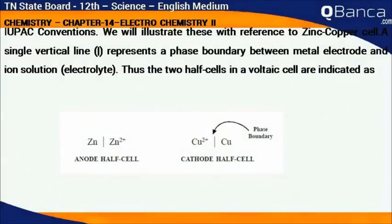IUPAC conventions — we will illustrate this with reference to the zinc-copper cell. A single vertical line represents a phase boundary between the metal electrode and the ion solution (electrolyte). Thus, the two half cells in a voltaic cell are indicated as Zn | Zn²⁺ for the anode half cell,